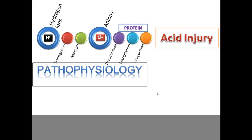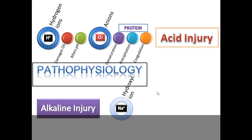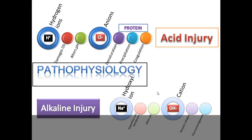With acid injuries, though penetration is quite less, involvement of the limbus is much more common. In alkaline injuries, the substance dissociates into hydroxyl ions and cations. The hydroxyl ions saponify the cell membrane and alter the pH, whereas the cations damage the stromal collagen and glycosaminoglycans.